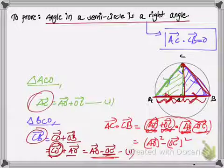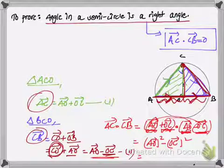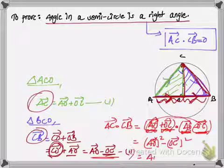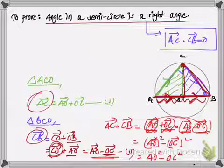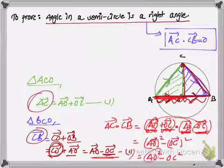Applying this formula, A plus B times A minus B gives A squared minus B squared. When we square a vector, the vector sign is cancelled and we are left with the square of its magnitude. So the result is |AO|² − |OC|².